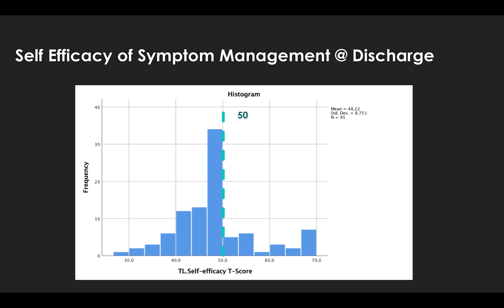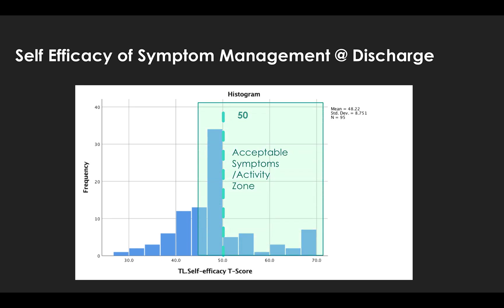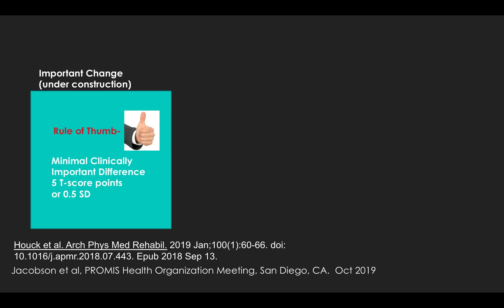Now we look at patients at discharge from physical therapy. For these same musculoskeletal patients, we can see that they've now achieved confidence about equal to other people with chronic conditions on average, and that many more patients are shifted above 50 or near the 45 mark — which is the acceptable zone for symptoms and physical activity. Now we move to the ability of the scale to detect change.